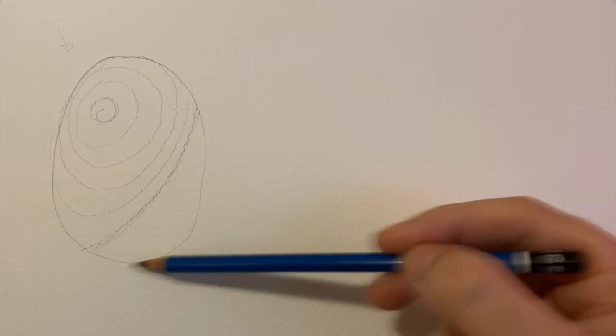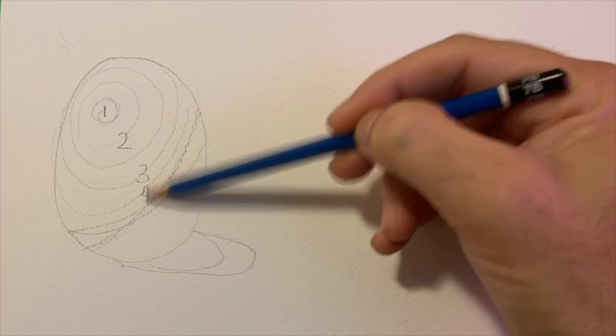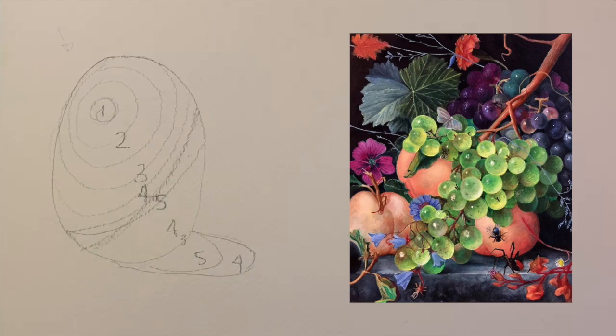So with the opaque one, I'm dividing it up into five basic tones. You can see the object and the cast shadow. Number one will be the highlight, two, three, and four mid-tones, and five will be the darkest tone.